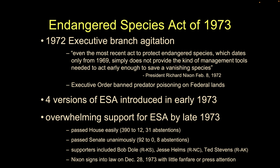It passes the House 390 to 12 — think of the last time something passed that easily — with 31 abstentions. It passed the Senate unanimously, because eight folks abstained rather than vote no. It passed the U.S. Senate unanimously. This was a different era. Supporters included people you might not associate with endangered species protections today — folks like Bob Dole, Jesse Helms, and Ted Stevens from Alaska, a big advocate of oil drilling.